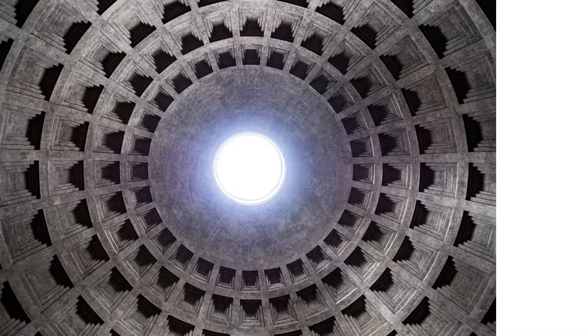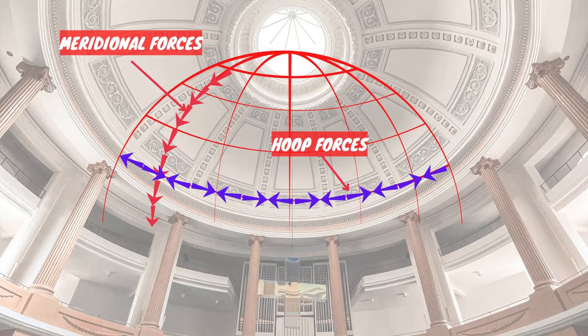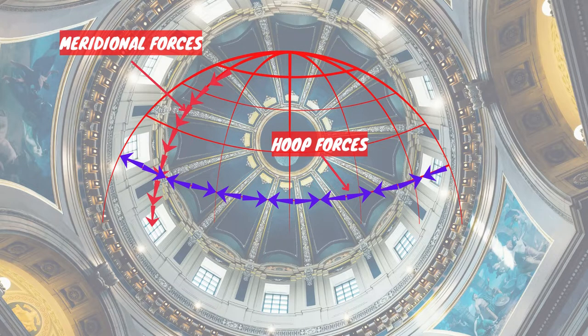From a structural point of view, a masonry dome produces thrusts downward and outward. These are thought of in terms of two kinds of forces at right angles to one another. The meridional forces, like the meridians or lines of longitude on a globe, are compressive only and increase towards the base. The hoop forces, like the lines of latitude on a globe, are in compression at the top and tension at the base.